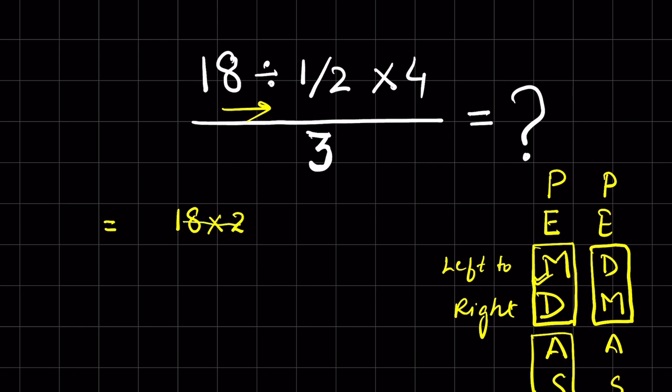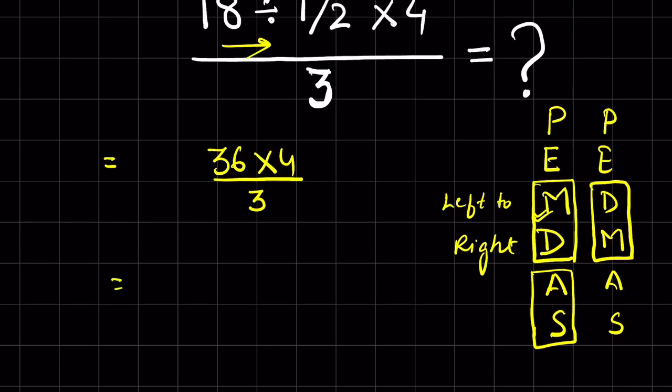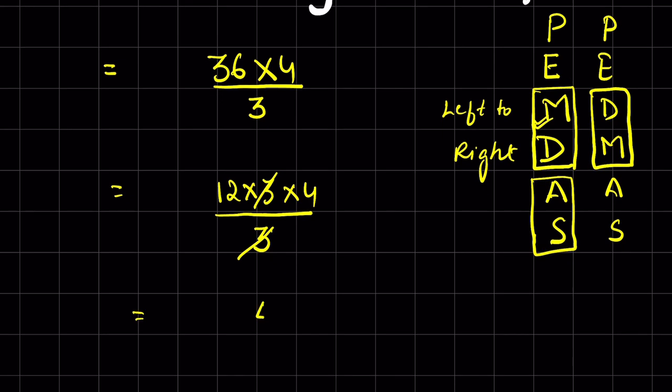Now we can cancel out the like factors. Here 36 we can write as 12 times 3, then times 4/3. Now cancel 3 and 3. 12 times 4 is 48, so the answer is 48.